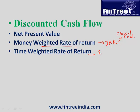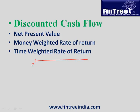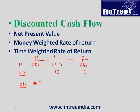Time weighted rate of return is the geometric mean of all holding period returns and is more appropriate for managers not allowed to time the market, typically open-end fund managers. Comprehensive example: a stock priced at 200 at time 0, 250 at time 1, and 210 at time 2, with dividends of Rs.10 at times 1 and 2. A fund manager purchased 5 units at time 0, 10 units at time 1, and sold all 15 units at time 2.